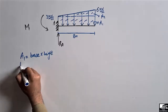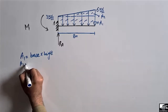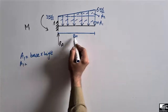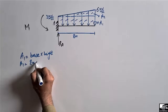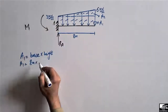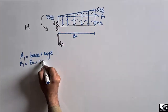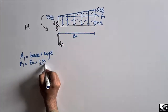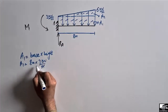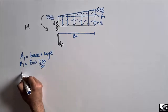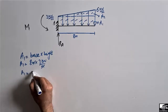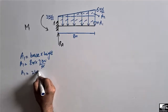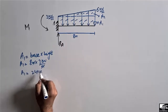A1 will be equal to base times height. The base is 8 meters and the height of the rectangle is 3 kilonewton per meter. The units of meters cancel, so we get the total load in kilonewtons. A1 equals 24 kilonewton.